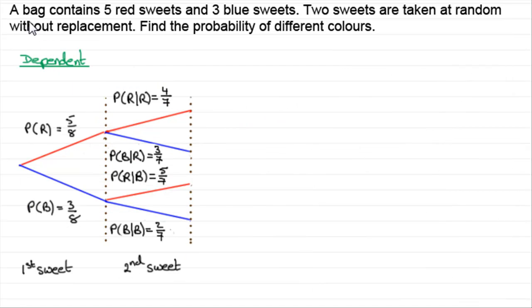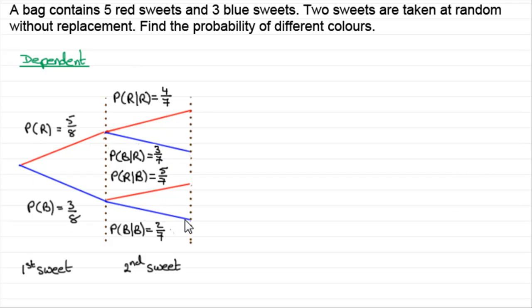So here it is: we've got the bag again with five red sweets and three blue sweets, but this time we take two sweets out without replacement — conditional probabilities. The probability of a red given that a red was previously taken: we're down to seven sweets, four of them red, so probability is four sevenths. The probability of blue given red: still seven sweets but three blue, so P(B|R) = three sevenths. We covered this tree diagram in an earlier video.